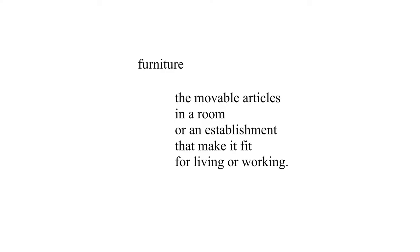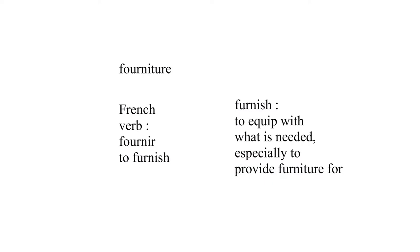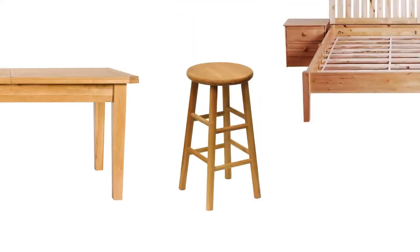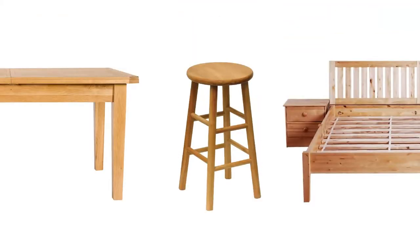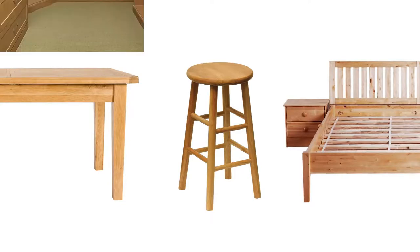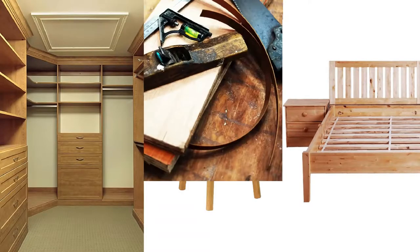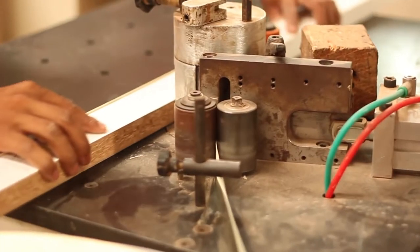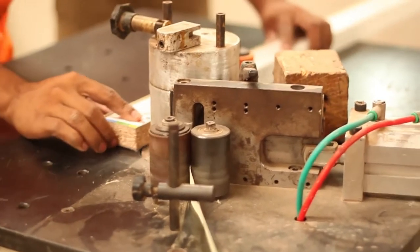Furniture is making objects for basic functions of sitting, sleeping, and additional functions like storing and supporting. The art involved in making furniture is called carpentry, which is done manually with the use of various tools.